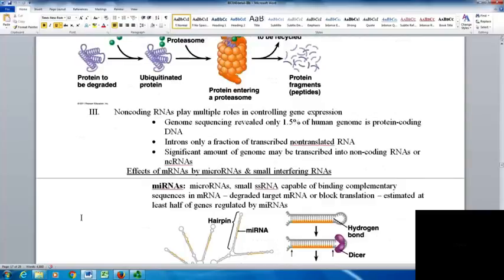Non-coding RNAs play roles in controlling gene expression. When we sequenced the human genome, it revealed that only one and a half percent is actually protein-coding DNA. The introns are just a fraction of the transcribed non-translated RNA—there's a significant amount of the genome that may be transcribed into non-coding RNAs or ncRNAs.